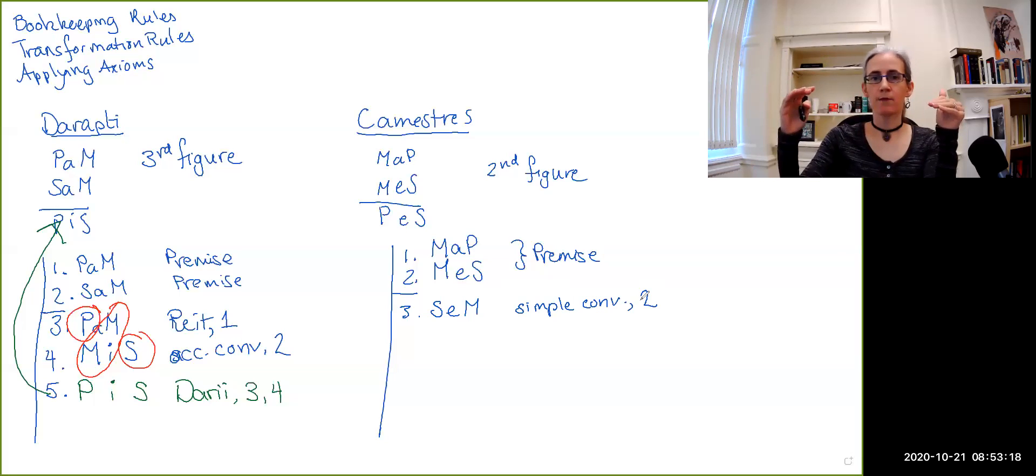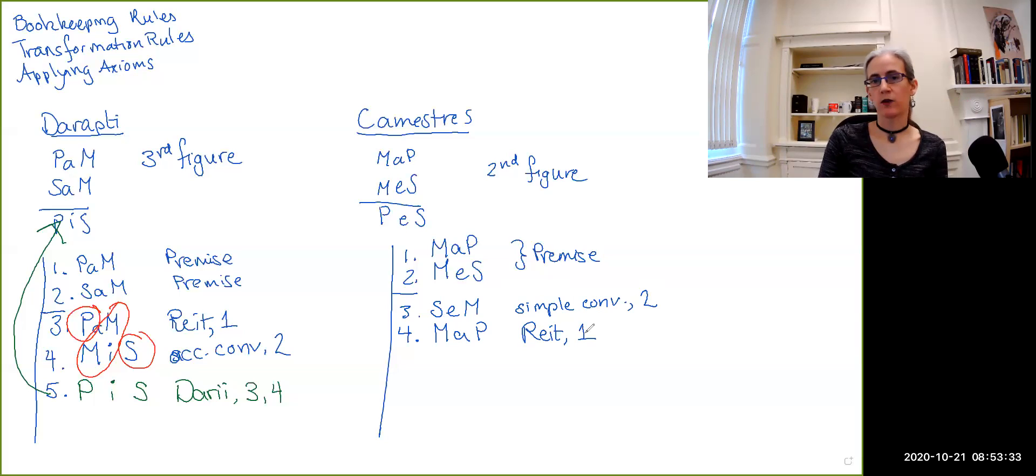Now I'm going to take the top premise—the major premise—and move it down so that it's below what I've just derived. So here we get MaP. This is just reiteration of line one. Why do I want to do that? It's because then I have something where we've got the middle terms in the diagonal, and then we have a predicate term and a subject term. Now don't be confused that in this particular pairing, our subject term is P and our predicate term is S.